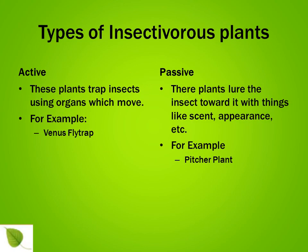The two main types of insectivorous plants are active and passive. The active insectivorous plants trap insects using organs which move, like the Venus flytrap. The passive insectivorous plants are those which lure the insect towards them with things like scent, appearance, etc. For example, the pitcher plant.